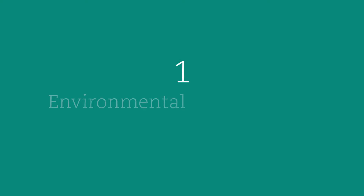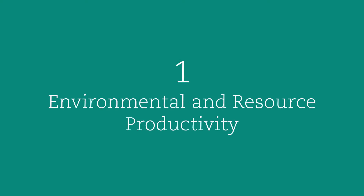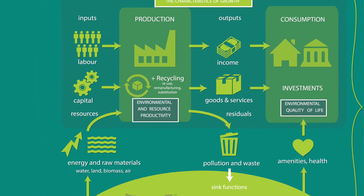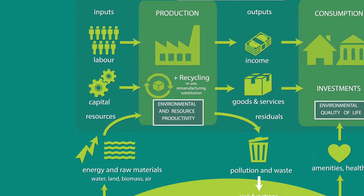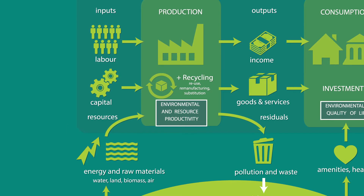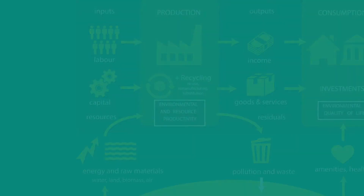Let's look at the first group: Environmental and Resource Productivity. These indicators are used to see if countries are becoming more efficient in using energy, other natural resources, and environmental services. The indicators in this group reflect key aspects of the transition to a low-carbon, resource-efficient economy.